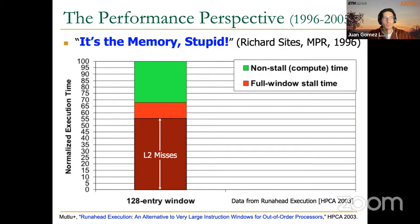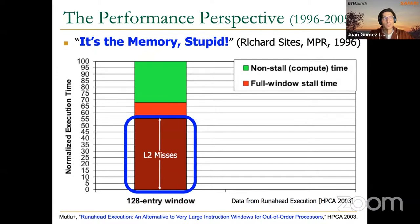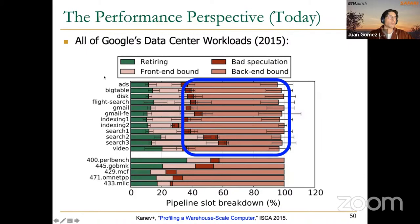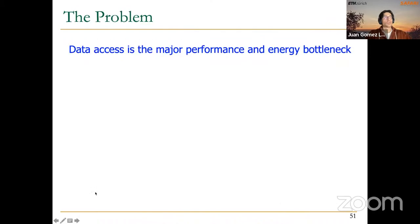This is not new. A slide from Professor Mutlu's PhD thesis from 2003 already showed that most execution cycles for important workloads were spent accessing memory — around 55 percent of total execution time was spent resolving L2 cache misses and going to DRAM. A more recent 2015 study from Google similarly showed that a large fraction of execution cycles was spent on data access across workloads running in their data centers.